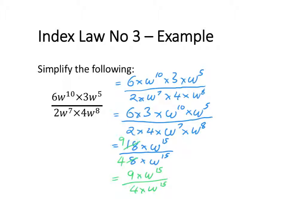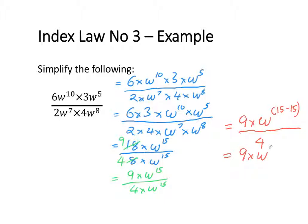Now I can use the second index law to simplify w to the power of 15 divided by w to the power of 15. That is going to become 9 times w to the power of 15 minus 15, over 4, which equals 9 times w to the power of 0 over 4.